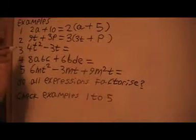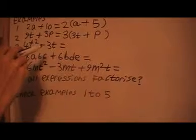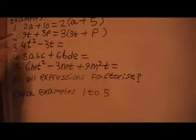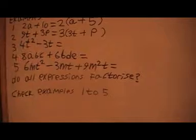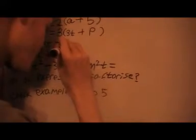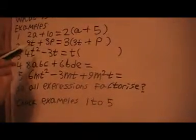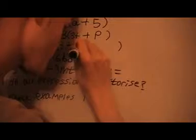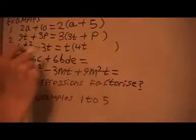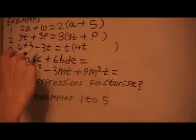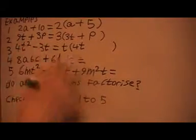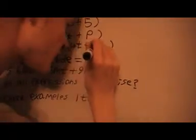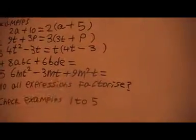Now in this one there's no number that's a factor. But if you notice we've got a t squared and a t here. So I can take t out as a factor. Now to get 4t squared I need to multiply t by 4t. So I'll put 4t there. And then to get minus 3t, I've already got my t so I'll just put minus 3 in there. And then when I multiply them I get my minus 3t.